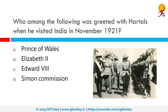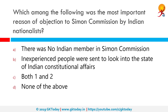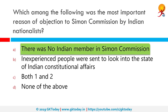Who among the following was greeted with hartals when he visited India in November 1921? The correct answer is the Prince of Wales. Common people actually boycotted him, and along with this, the All India Congress Committee took a strong stance and decided to boycott the upcoming visit. Gandhiji sought the filling of prisons with volunteers, organizing volunteer corps. Which among the following was the most important reason for objection to the Simon Commission by Indian nationals? The fact that there was no Indian member in the Simon Commission was why we objected.